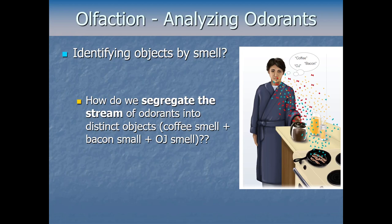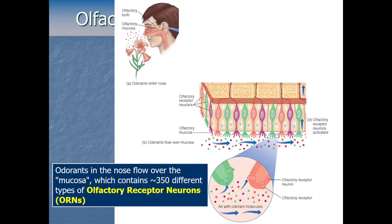When molecules land in our nose, they enter the nasal cavity and hit a mucousy layer at the top called the olfactory mucosa. The topmost layer in that region is a bone called the cribriform plate, which separates the nasal cavity from the brain above it. Below the cribriform plate is the olfactory mucosa — the mucousy layer at the top of our nasal cavity — and embedded within it are a ton of little neurons for olfaction.